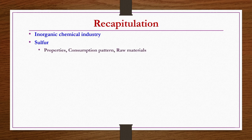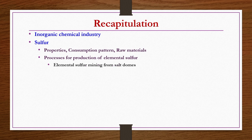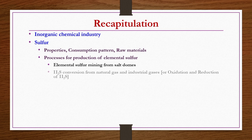In the previous couple of lectures, we started with a discussion comparing the inorganic and organic chemical industries. Then we started discussions on sulphur — its properties, consumption pattern, raw materials — followed by processes for production of elemental sulphur. Three different types of processes are available: mining from salt domes, H2S conversion from natural gas, and iron pyrites.